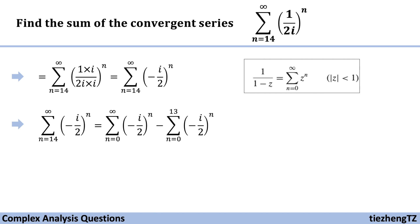The first part, n starts from 0 to infinite, we can just substitute minus half i into this z function which becomes 1 over 1 minus minus half i.